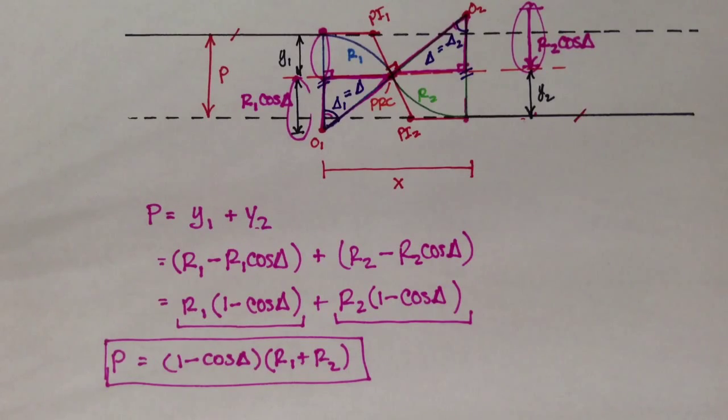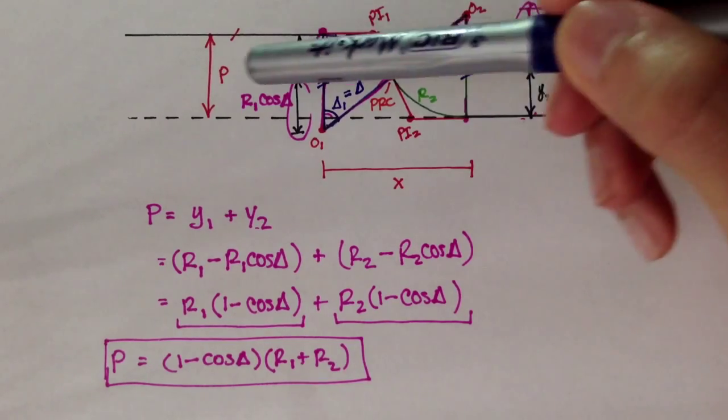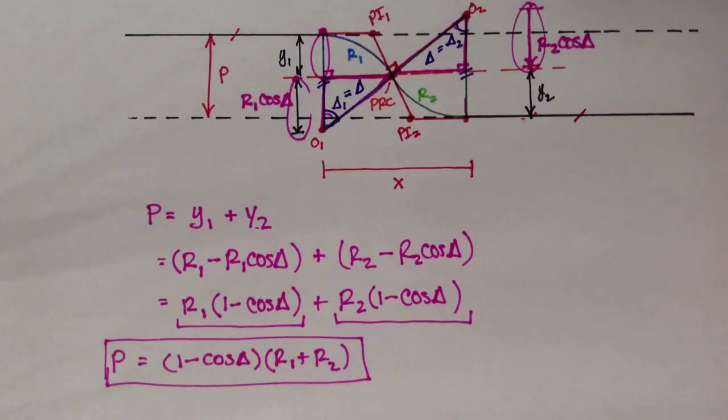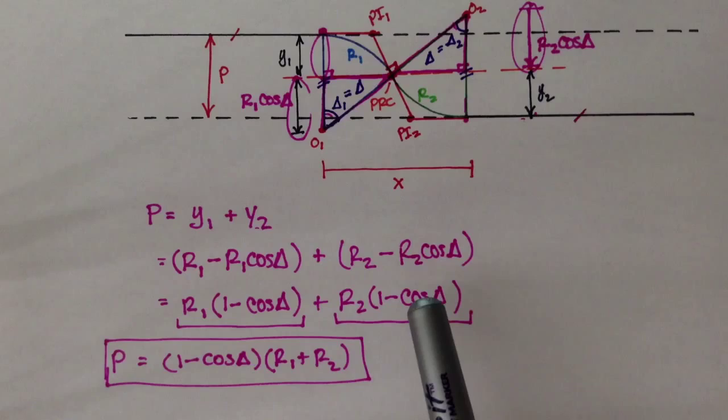Alright, in the last video we figured out how to derive an expression, or an equation, to figure out what the distance would be between two parallel roads, and that was the parameter P. In this video we're going to look at the parameter X, which is the transition length, and if you remember,